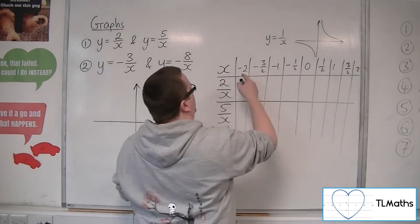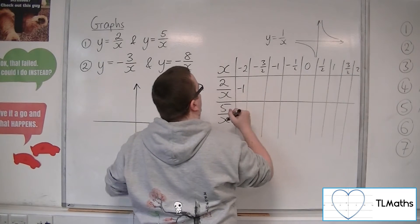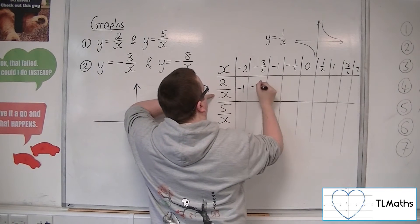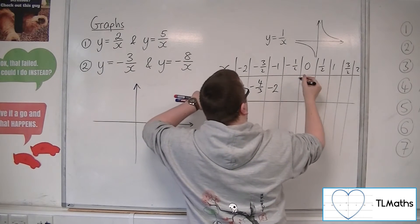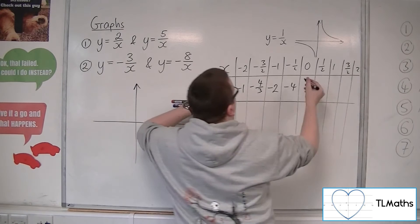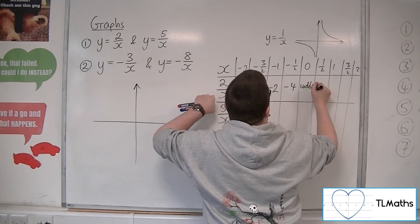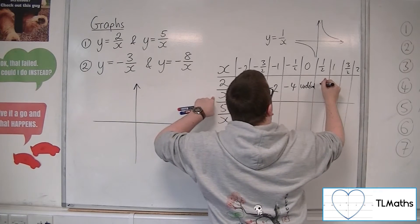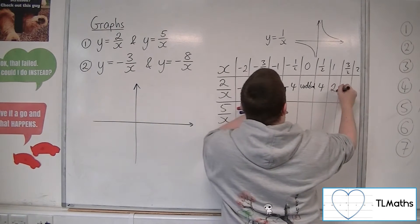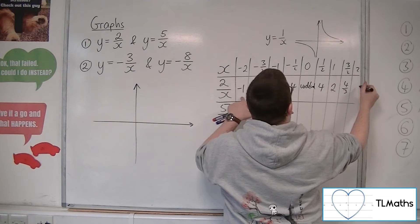So then we've got 2 over x. So 2 over minus 2 will be minus 1. 2 over minus 3 halves will be minus 4 thirds. 2 over minus 1 is minus 2. 2 over minus 1 half is minus 4. 2 over 0 is undefined. 2 over 1 half is 4. And then we'll have 2, 4 thirds, and 1.